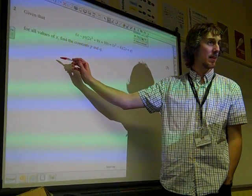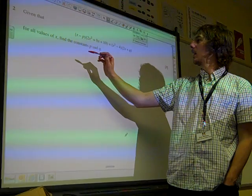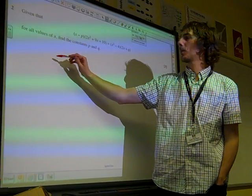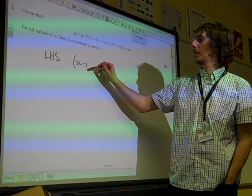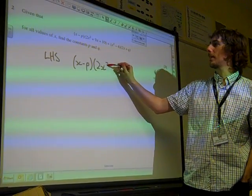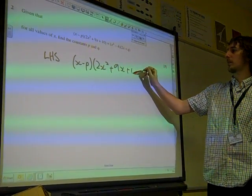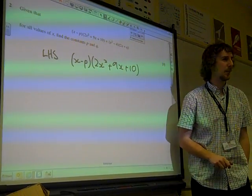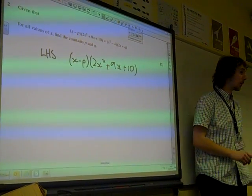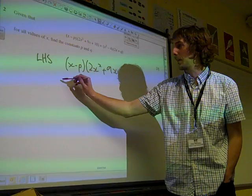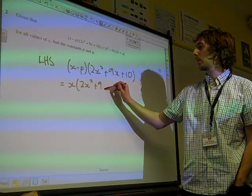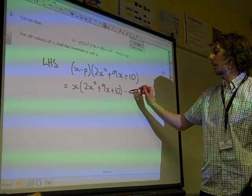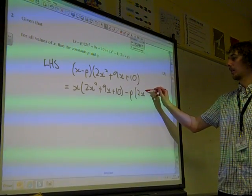So if we look at the left hand side, we've got x minus p times 2x squared plus 9x plus 10. Right. What would that be if we multiply that out? Deliberately I'm going to take a few steps to do this. So that would be x times all of that minus p times all of that.